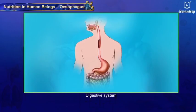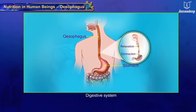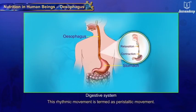Esophagus: this partly digested food is carried down to the J-shaped stomach through a tube known as the esophagus. Movement of food from the mouth to the stomach is assisted by rhythmic contraction and relaxation of muscles of the esophagus. This rhythmic movement is termed as peristaltic movement.